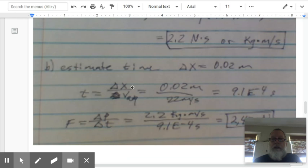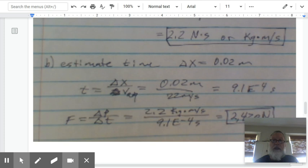The second part—we were asked to estimate the time of the collision. The golf ball is going to be in contact with the golf club for 0.02 meters. So we can take time equals distance divided by average velocity. The distance is 0.02, and the average velocity would be 22 meters per second. So we end up with 9.1 times 10 to the negative fourth seconds.